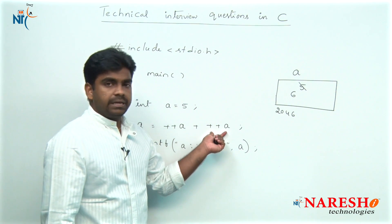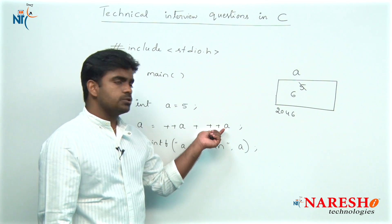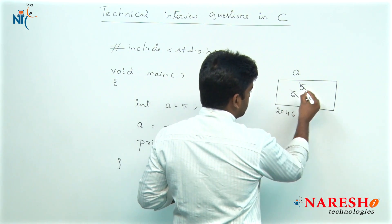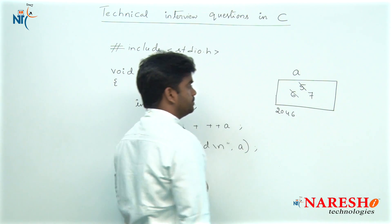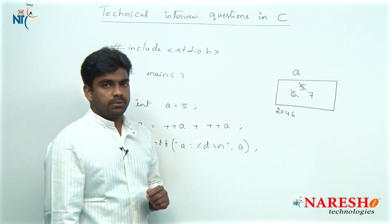Here there is one more pre-increment operator, that is also variable a only. So increase once again, 6 becomes 7.